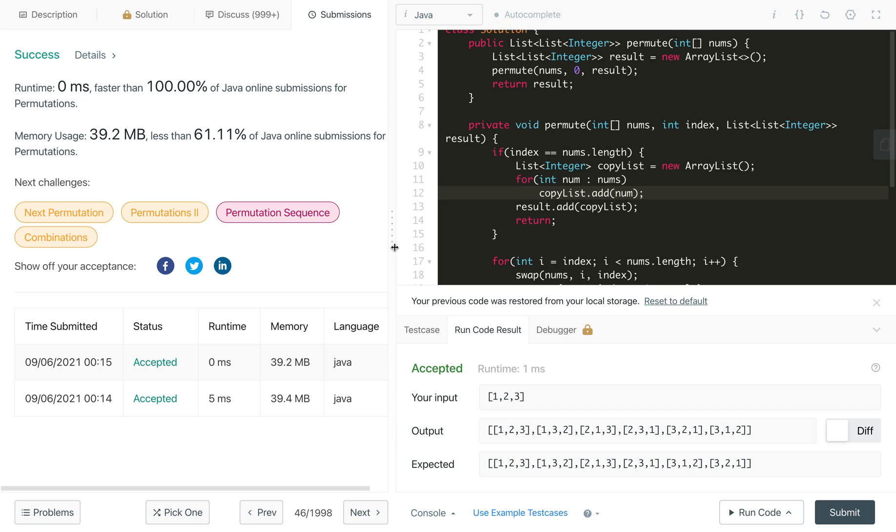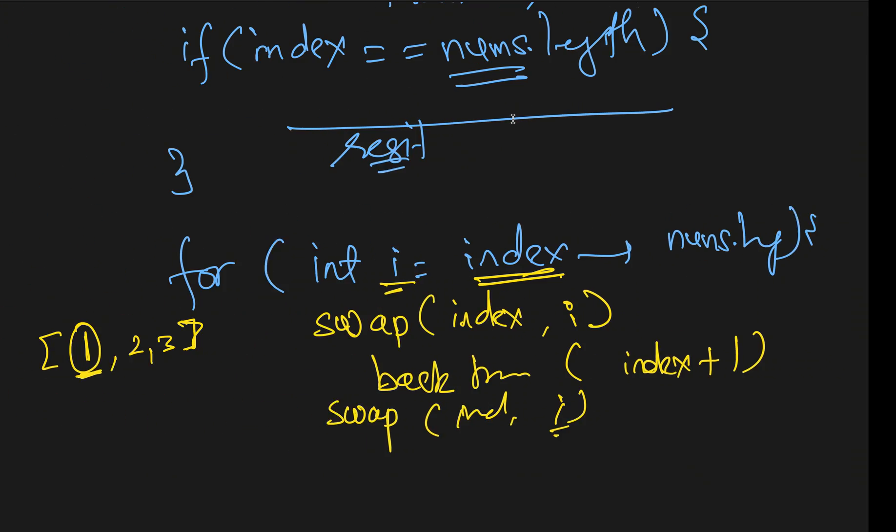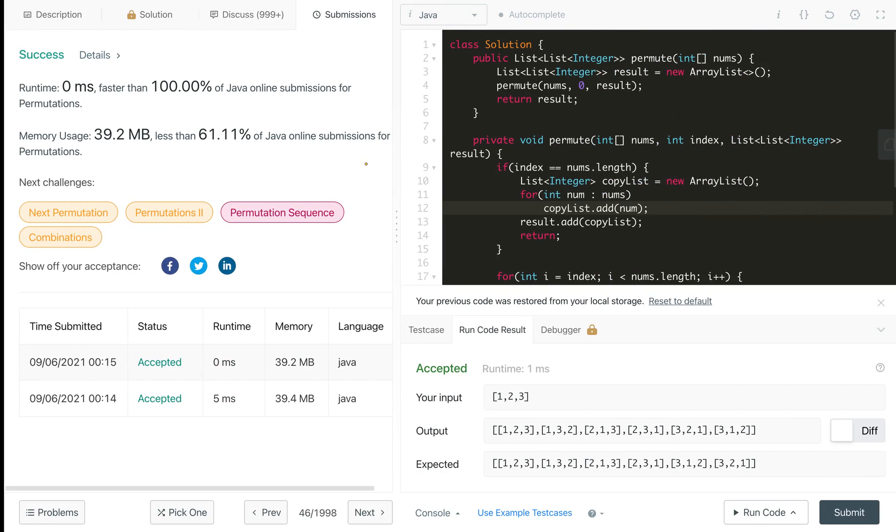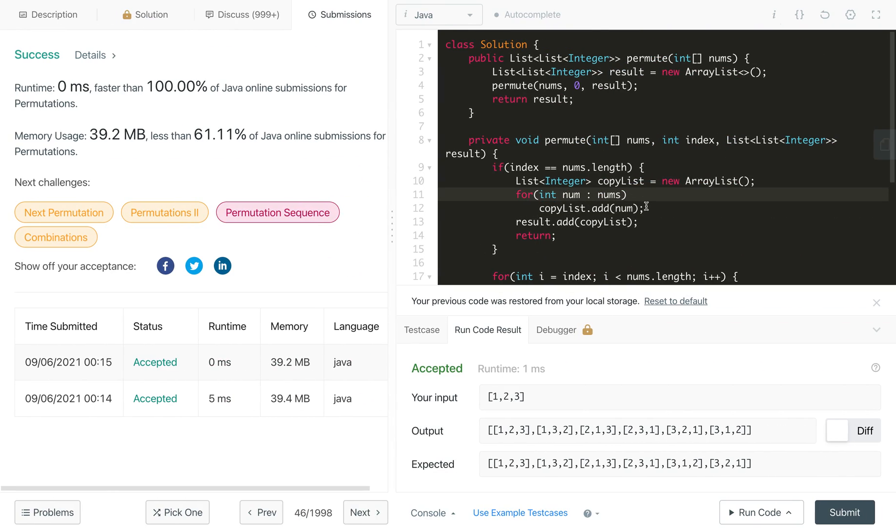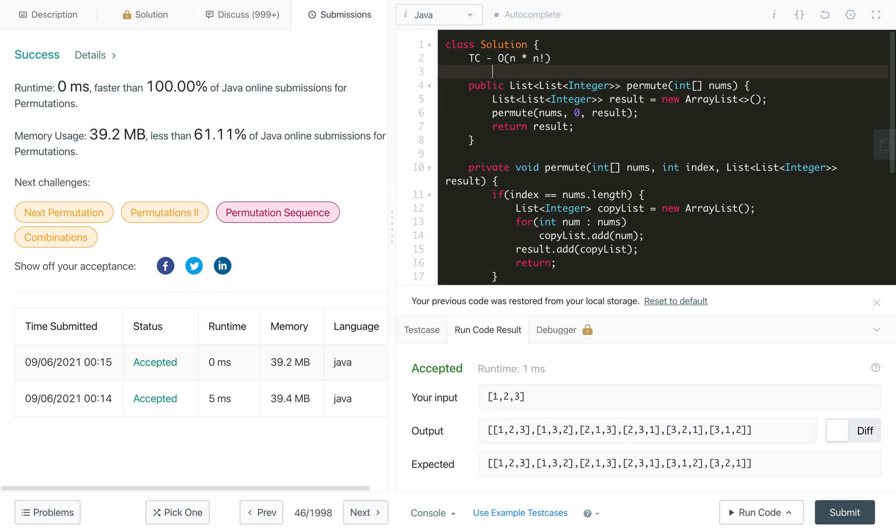What is the time and space complexity? As we saw in the tree, in our permutation tree, we will have total n factorial permutations and for each we are copying from the arrays to the list, so that will be n times. So the time complexity of this solution is O of n into n factorial and the space complexity is O of n factorial.